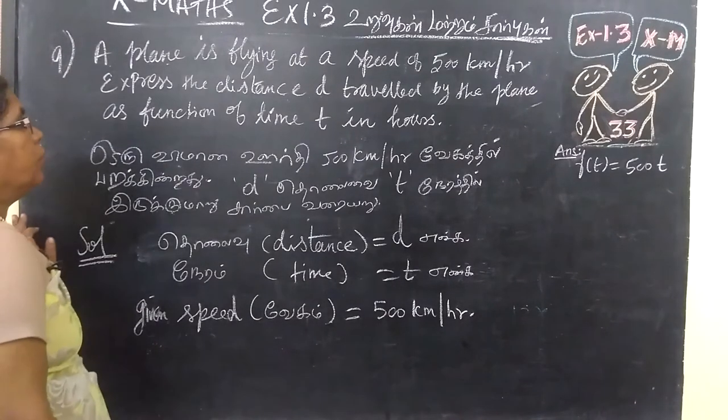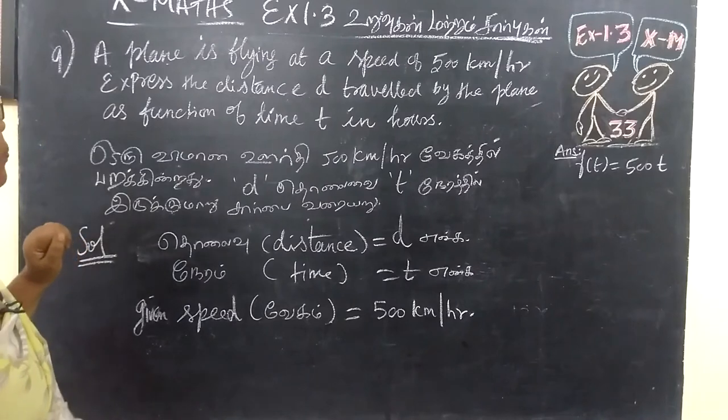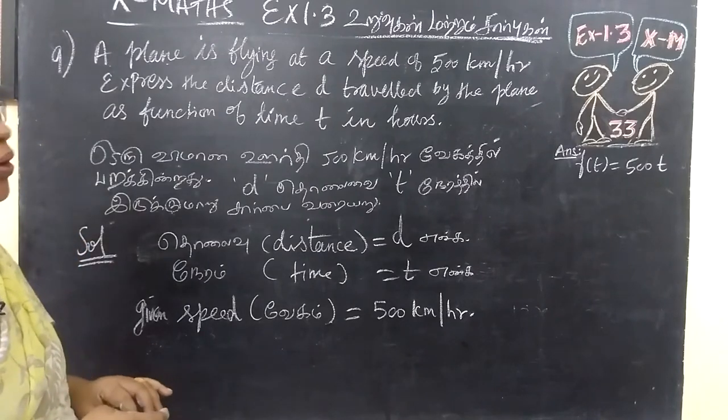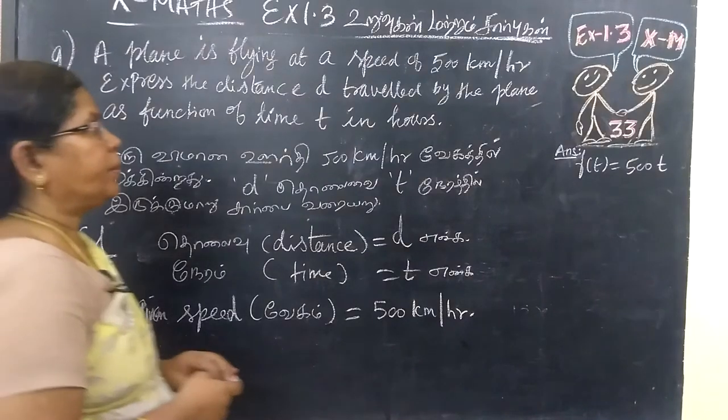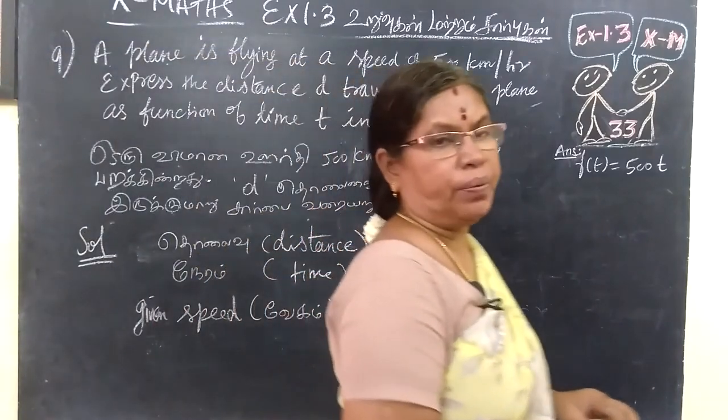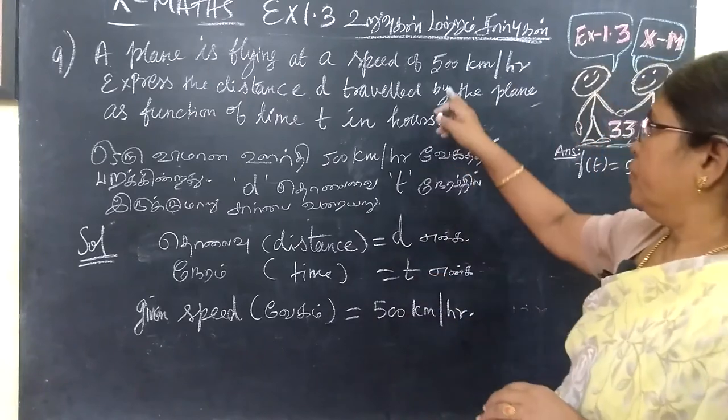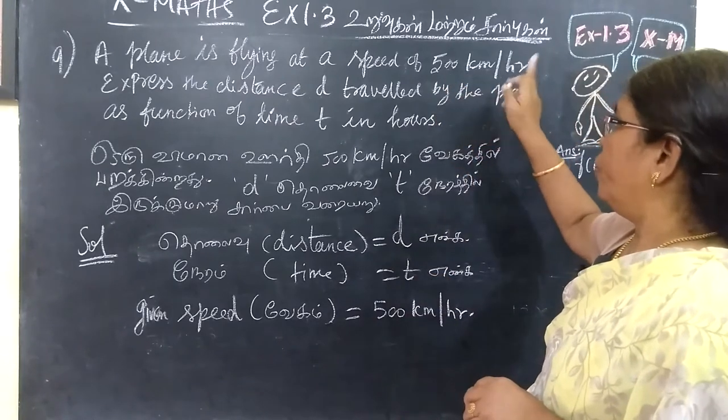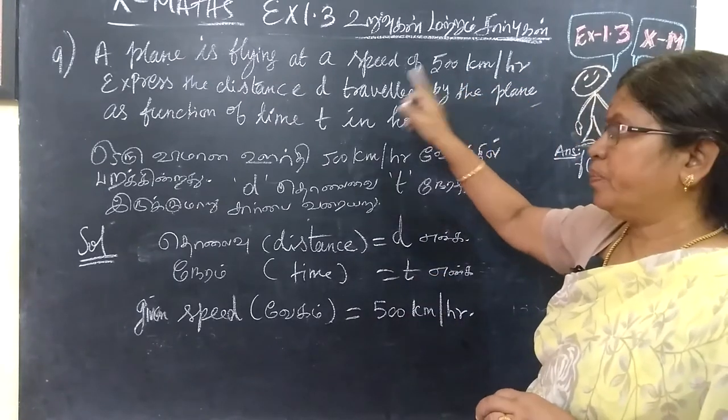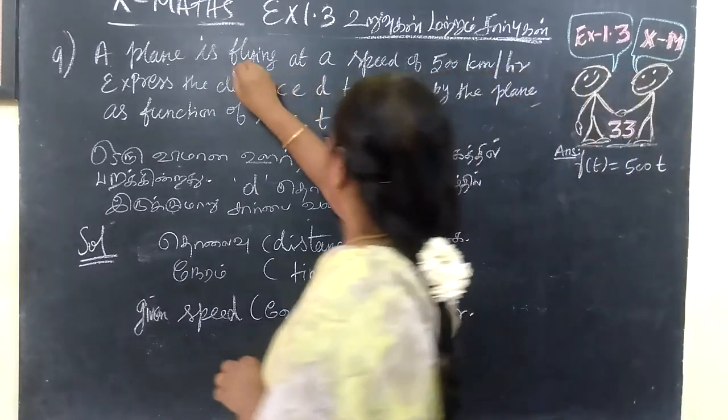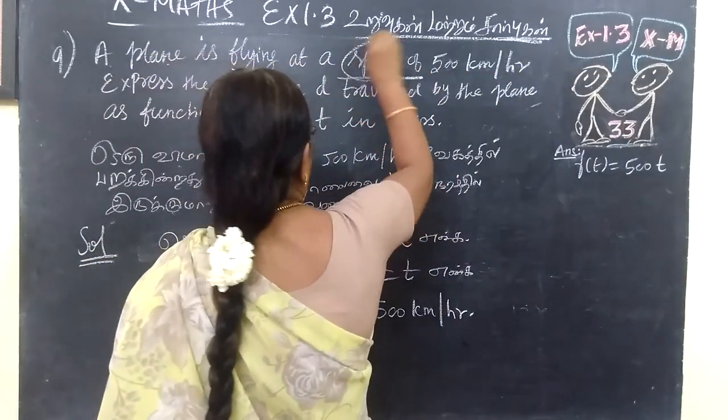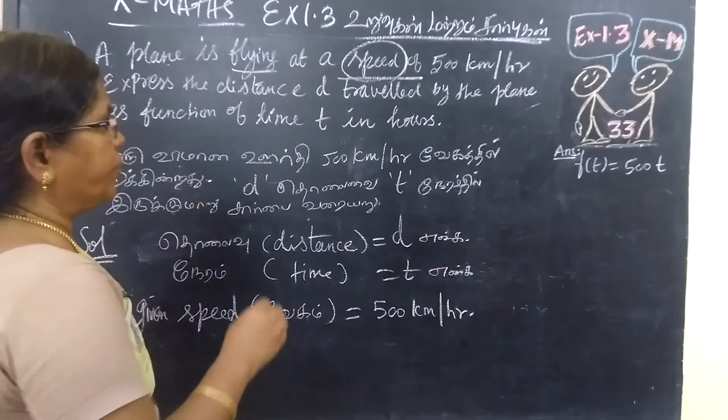Now question number 9, 10th master, exercise 1.3. A plane is flying at a speed of 500 km per hour. Express the distance traveled by the plane as a function of time.